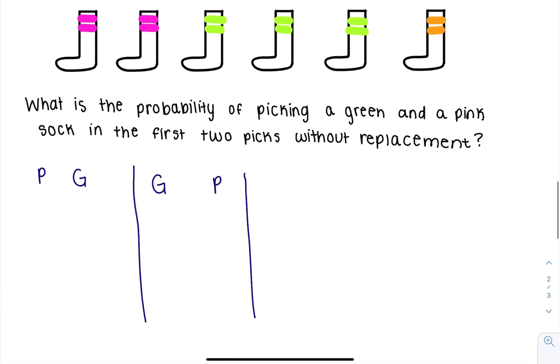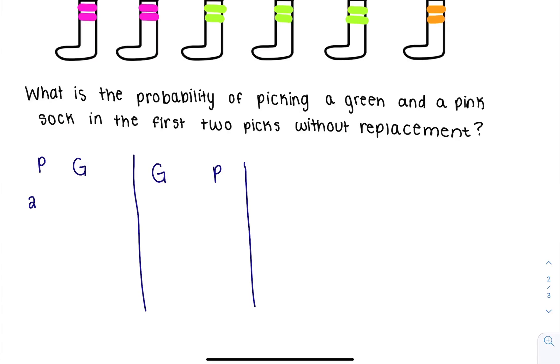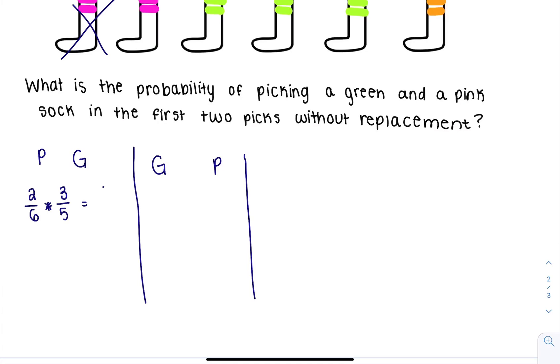If I did this, I would have a 2 out of 6 and I would multiply it then. I've drawn my pink sock, so now I only have a 3 out of 5 chance of drawing a green. Which ends up being 6 out of 30 or 0.3.